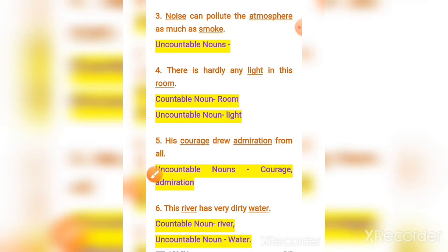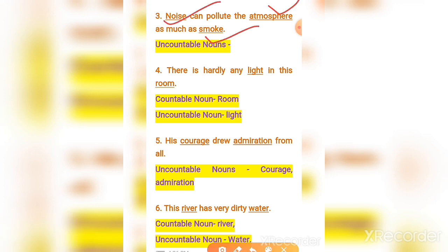Number three: 'Noise can pollute the atmosphere as much as smoke.' The words 'noise,' 'smoke,' and 'atmosphere' — all three are uncountable nouns. Number four: 'There is hardly any light in this room.' The word 'light' is uncountable.